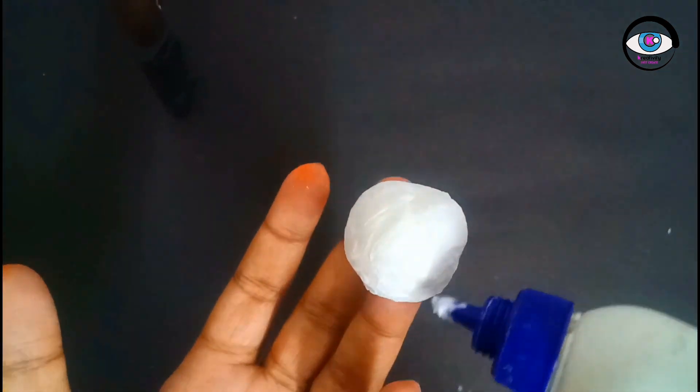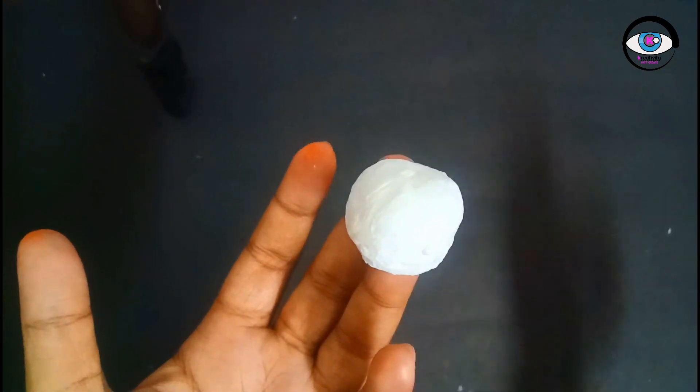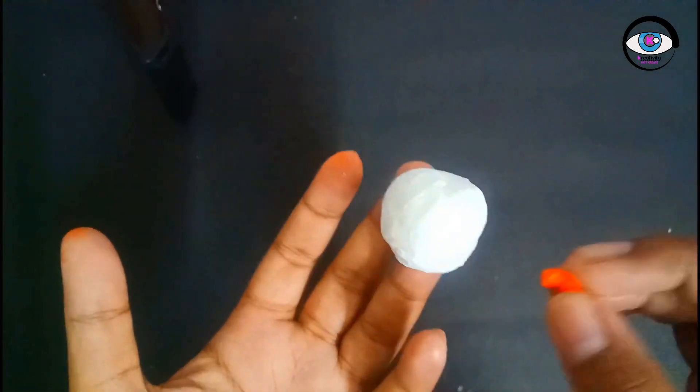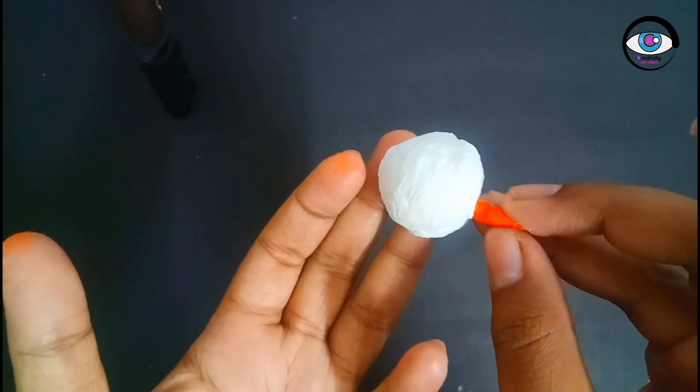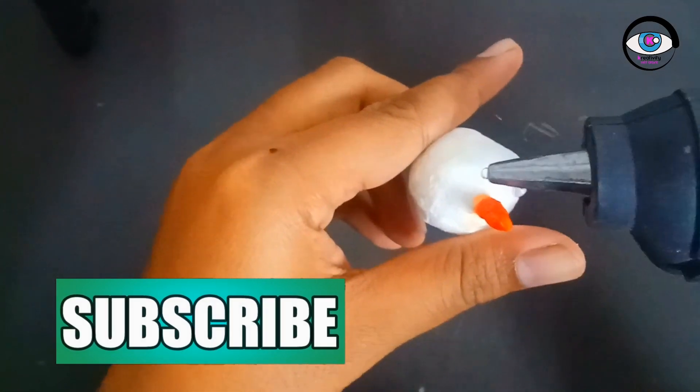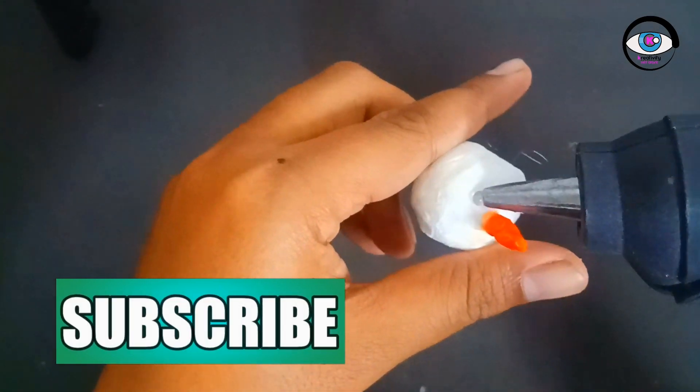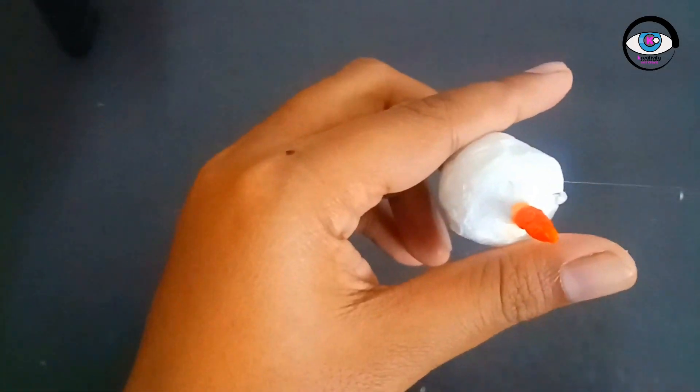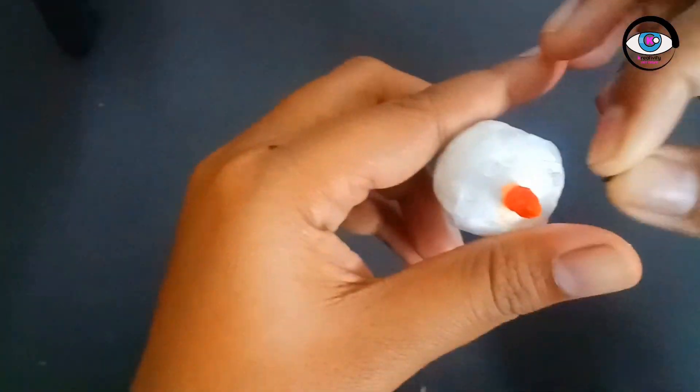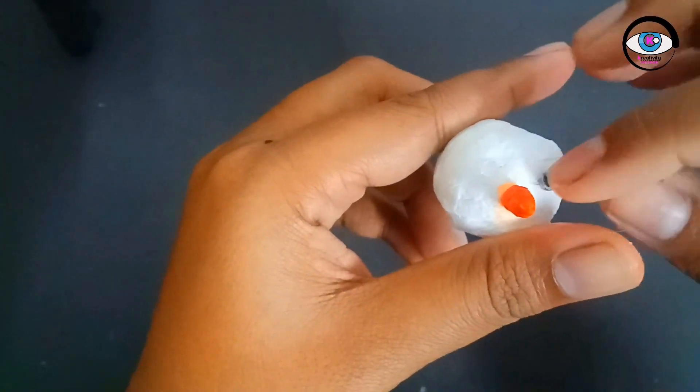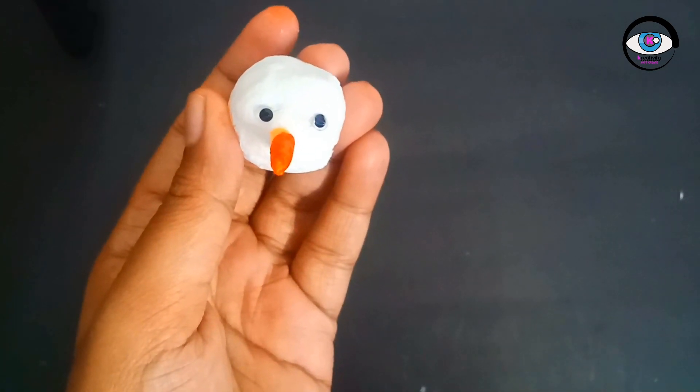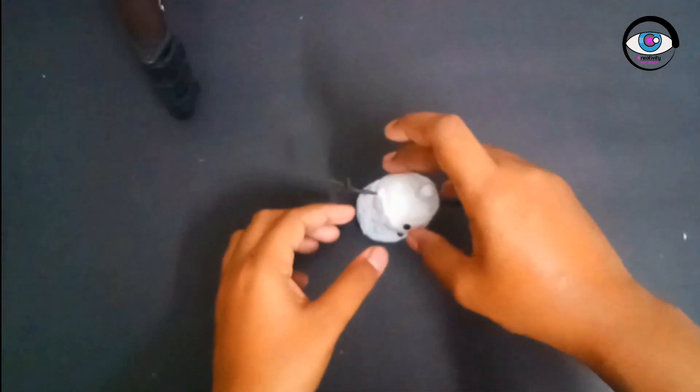Now, take the smaller ball structure and attach the nose and eyes. Now, our snowman is complete. Arrange it like this and play with it.